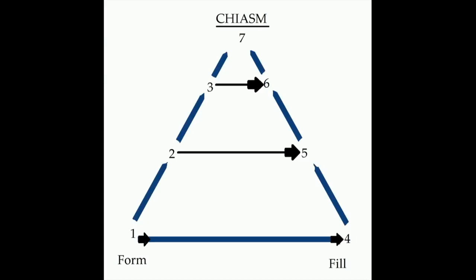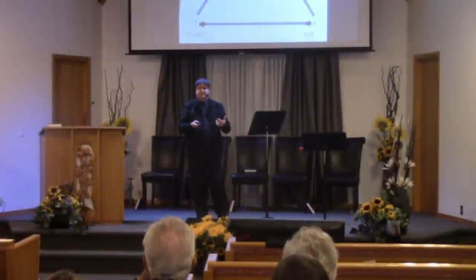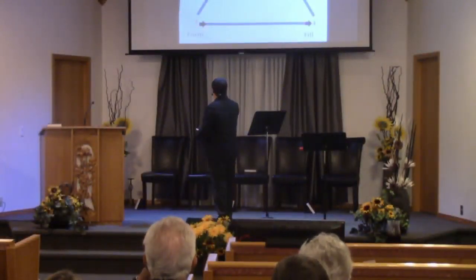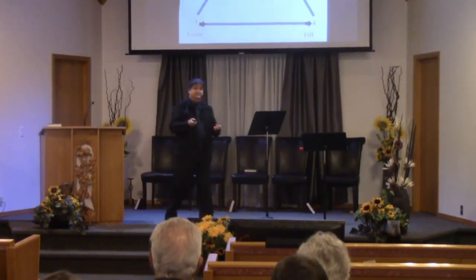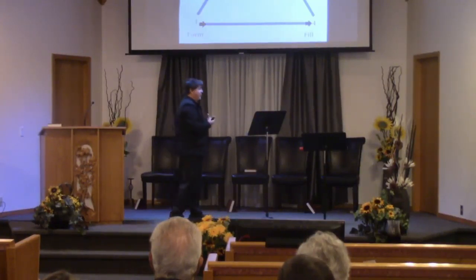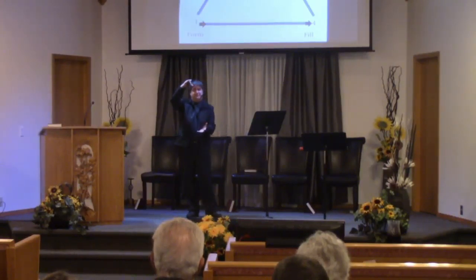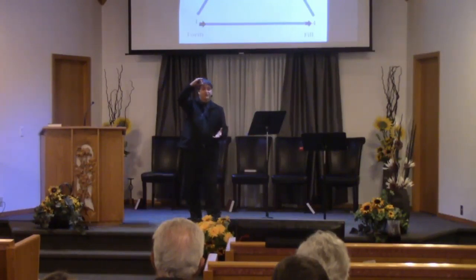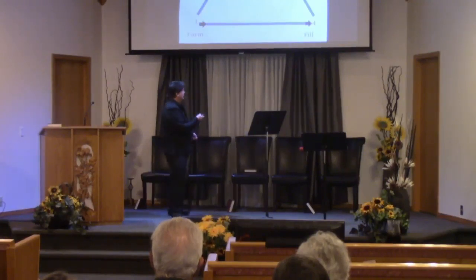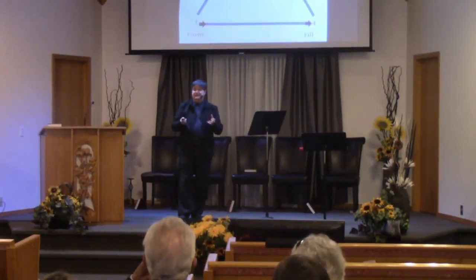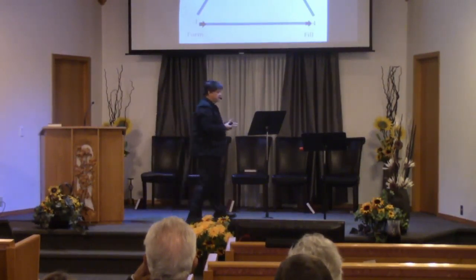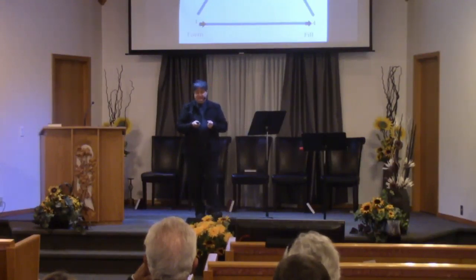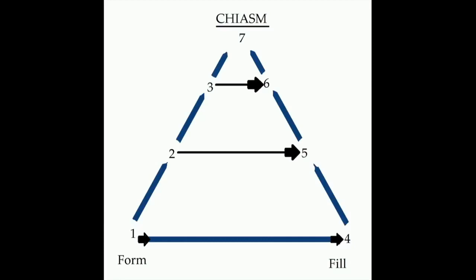You have day one of creation: God forms the heavens and the earth and separates day from night. Day four: God fills the space with the sun, the moon, and the stars. Day two: God forms the space — the atmosphere that is our air — separating the waters from the water, creating an atmosphere. Day five: he fills it with birds and fish. Day three: he forms the dry land. Day six: he fills the dry land with plants, animals, and man.